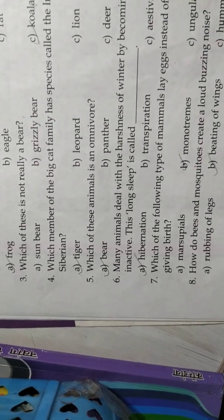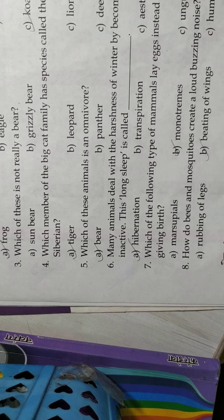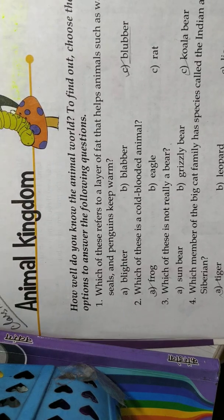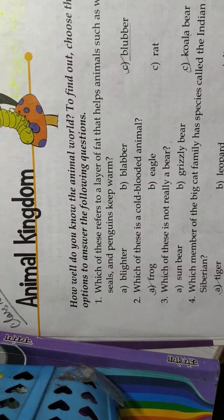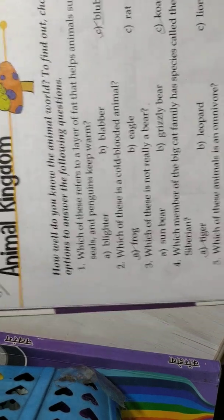Hello children, today we are going to learn General Knowledge of Class 4 and the book name is Know for Sure by Siddharth Basu and first lesson which we are going to learn is Animal Kingdom. In Animal Kingdom we have many questions and we have the options also.